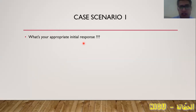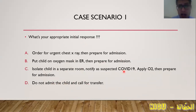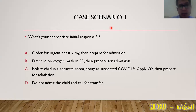What is your appropriate initial response? The correct answer is to isolate the child in a separate room, notify suspected COVID-19, apply oxygen, then prepare for admission. When you suspect COVID-19, the first thing to do is protect yourself, your team, and your other patients. Don't be in a hurry to save the patient at the expense of yourself, your team, or other patients. If you order urgent chest X-ray, the patient goes to radiology and exposes the technician and other patients. If positive, you spread infection everywhere.